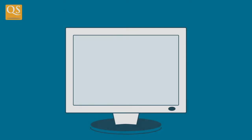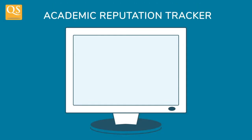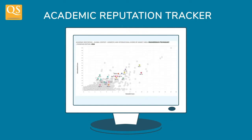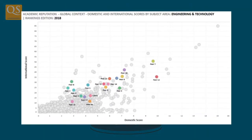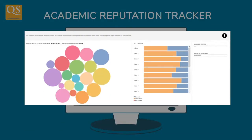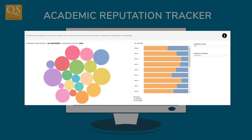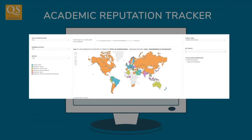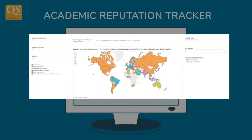The academic reputation tracker, which provides access to the data from the QS global academic survey and enables you to understand how your institution and your competitors are perceived among global peers.